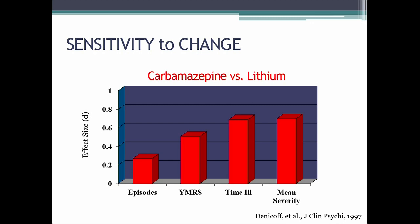They also counted the number of episodes — if someone had a certain number of consecutive days of symptoms, that was called an episode. Finally, they used a standardized measure called the Young Mania Rating Scale. So all of these measures were used, three of them derived from the same daily rating data. The effect sizes showed that mean severity and time ill had fairly similar effect sizes, since they came from the same daily measurements. The Young Mania Rating Scale, done on a more monthly basis, had a somewhat smaller effect. And the number of episodes, with only four to five maximum possible values, had an even smaller sensitivity to change.